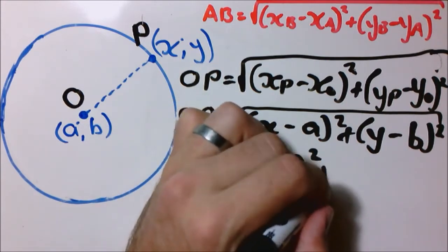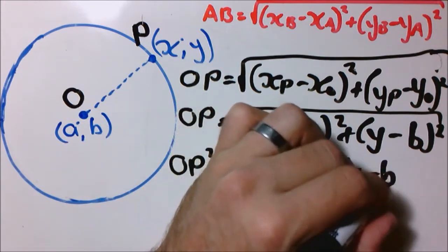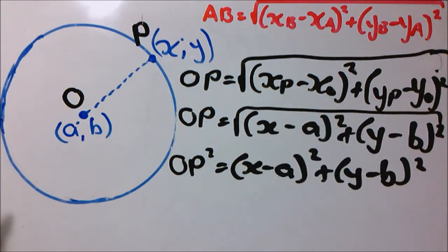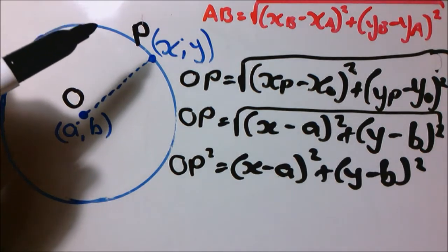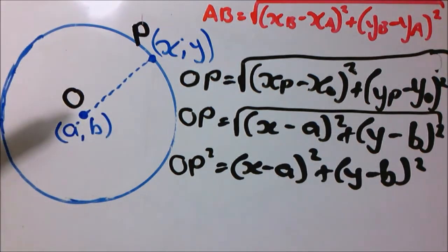We know that the distance from the center of the circle to the side of the circle is the radius of the circle.